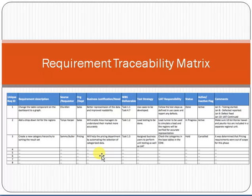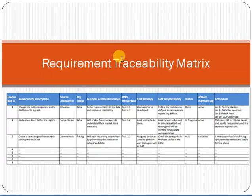This is a simple example of the Requirement Traceability Matrix. We use it to track requirements and deliverables — ensuring that as per the RFP, the project plan, and the scope, the correct deliverables are given to the customer and signed off. I hope you liked this video. Please share it with your friends and colleagues, subscribe to my channel, and click on the bell option. Thank you so much for your time.